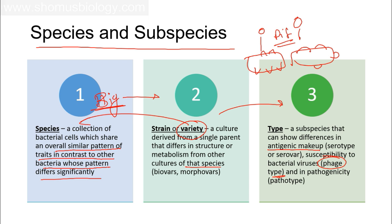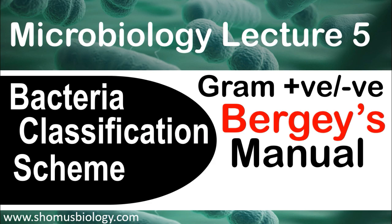The hierarchy goes: species is the largest, then strain or variety, then type as the smallest unit. No two types are exactly the same, and there is no further division after type. If you liked this video, please hit the like button, subscribe to this channel to receive notifications about microbiology video lectures, and share this video with friends on social media platforms. Thank you.